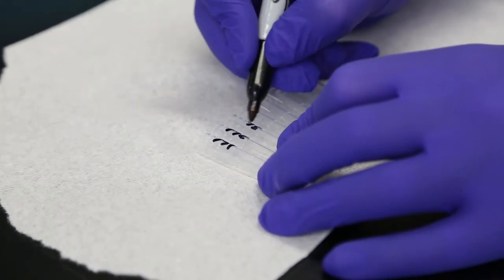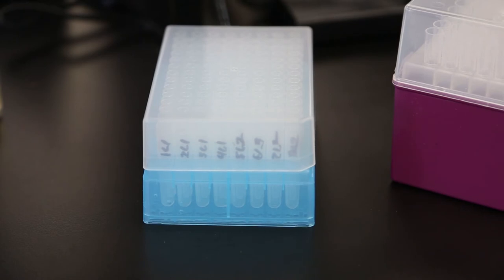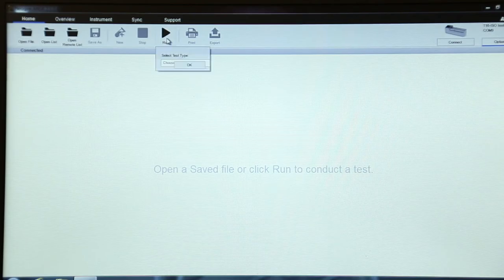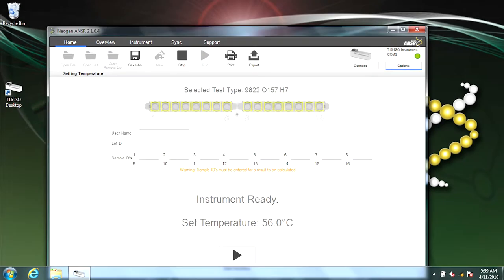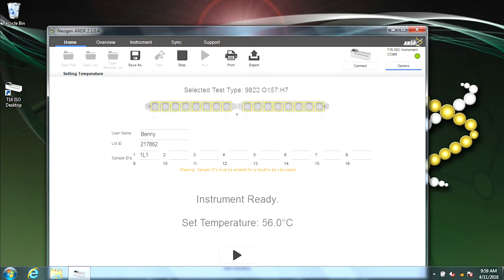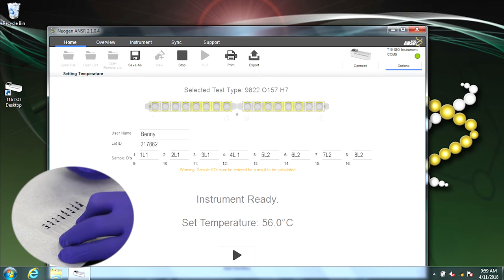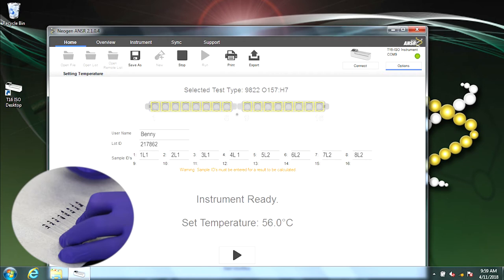Take a strip of the 1.2-milliliter cluster tubes and mark them to correspond to your labeled samples. Return the cluster tubes to the rack and label any additional tubes as needed. Remove your gloves, and from the computer, select Run. Select 9822 E. coli 0157H7 from the Test Type drop-down menu, then click OK. Fill in the username and lot ID from the kit and corresponding labels from your samples in the sample IDs. These should match the cluster tubes as well. If you do not put in a sample ID next to the well number, the reader won't read it even if it has a sample. Be sure to provide an ID for every well you're running. In this case, we are only running 8 samples, so wells 9 through 16 are empty. Any number of tests can be run at once. It does not have to be in multiples of 8.